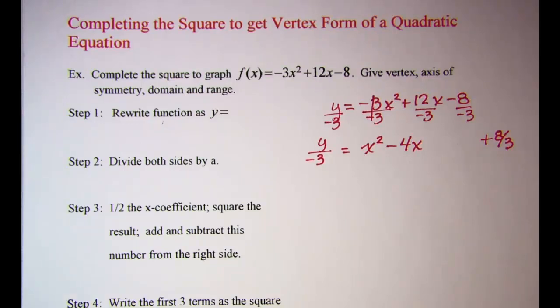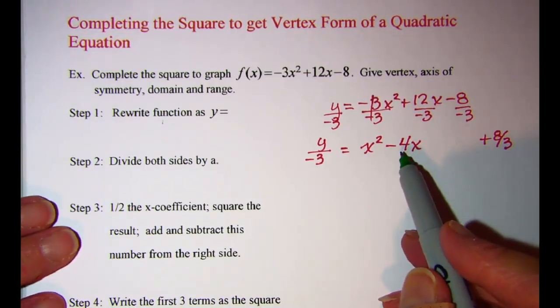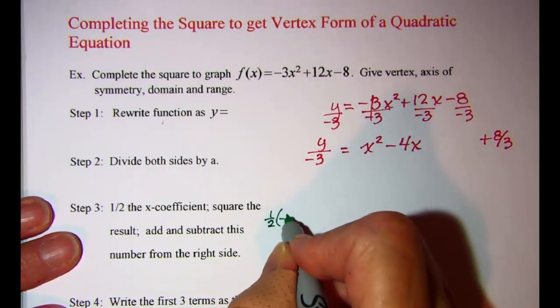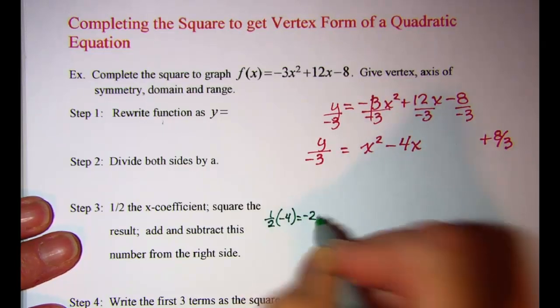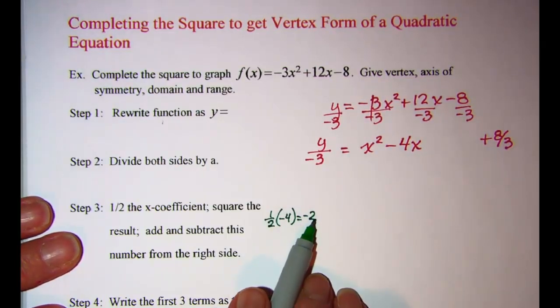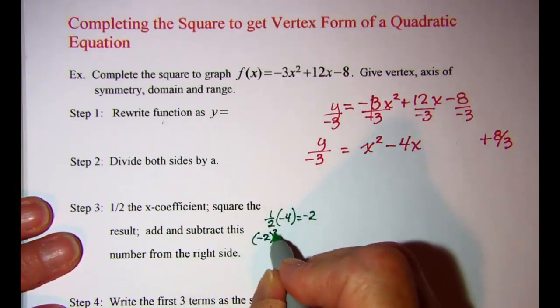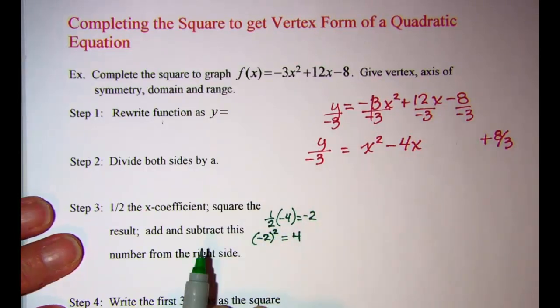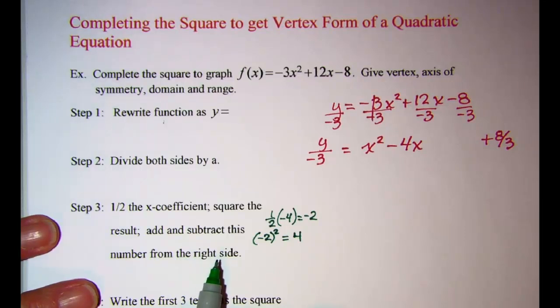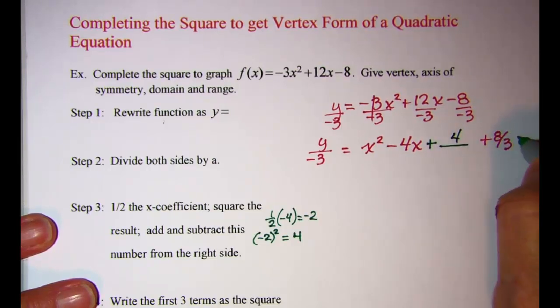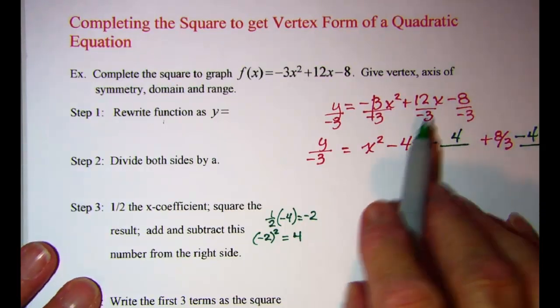Step 3, I want to take the x-coefficient, which in our case is negative 4, and I want to half that. So one half of negative 4 is negative 2. Then that number I want to square. So negative 2 squared is 4, and then I'm going to add and subtract that number from the right side. So I'm going to add 4 and subtract 4.